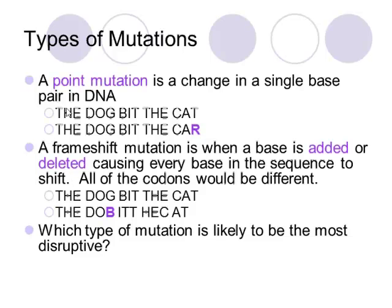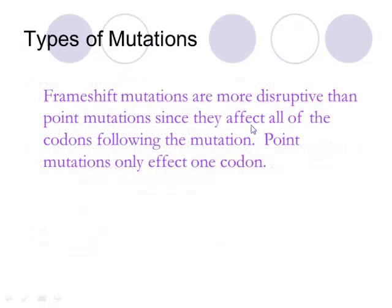Another type of mutation is an addition or deletion that causes a frameshift. For example, instead of 'the dog bit the cat,' if we removed the letter G, it would become 'the dob it hec kat' — completely garbled. Take a moment and think about which type of mutation is likely to be most disruptive. In general, frameshift mutations are more disruptive than point mutations because they affect every codon following the mutation, whereas point mutations probably only affect one codon. That said, as with Tay-Sachs disease, sometimes just a single base change can profoundly impact the organism.